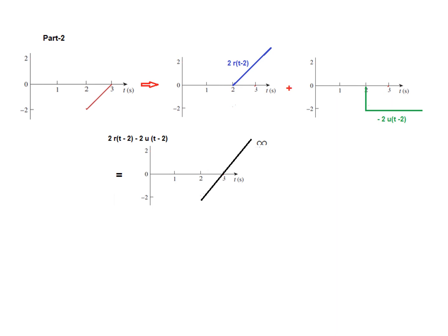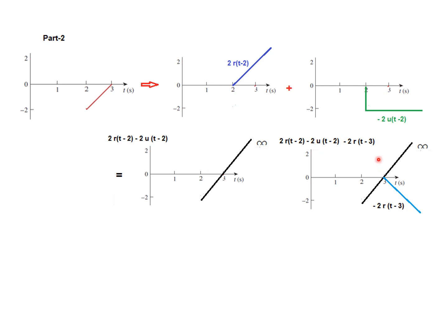To end the function at t = 3, we draw another ramp in the opposite, negative direction of the same slope, which is -2r(t-3), starting at t = 3. Whenever we add this, the summation of the two ramps becomes 0 beyond t = 3, achieving the desired function. The final value for part 2 is: 2r(t-2) - 2u(t-2) - 2r(t-3).